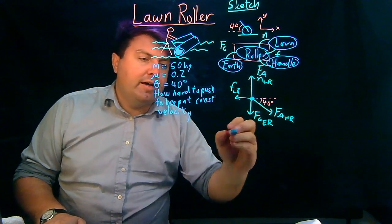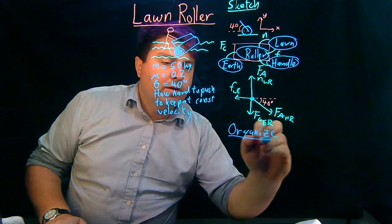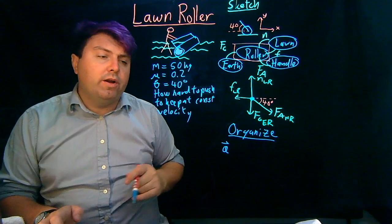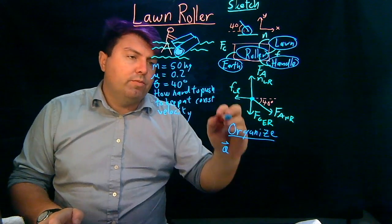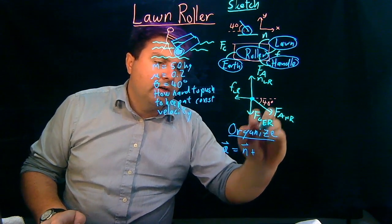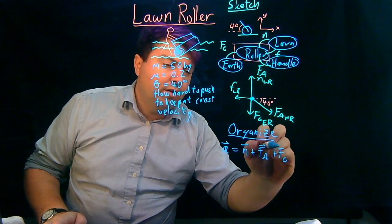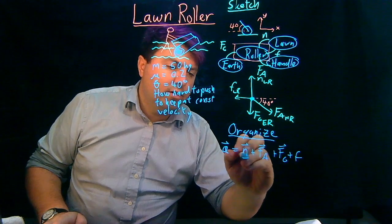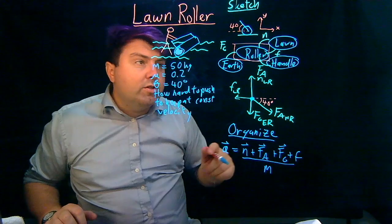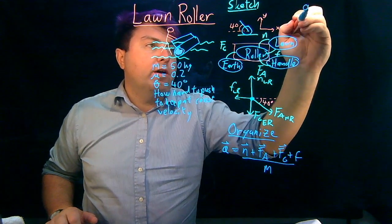So now that we have that, we can start our organized step. With our organized step, we're now just going to list off what our forces are. So we can just go from here kind of clockwise. So we have our normal force, we have our force applied, we have our force of gravity, and we have our force of friction. And we divide that all by the mass. So once we go into that, then we can then start looking at our organized step by looking in the x direction and the y direction.